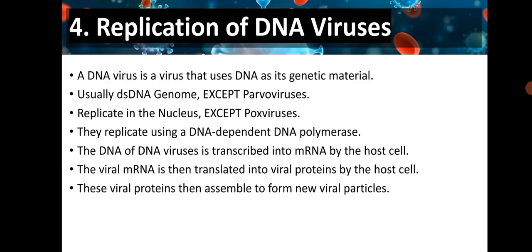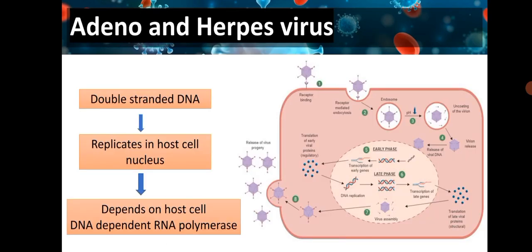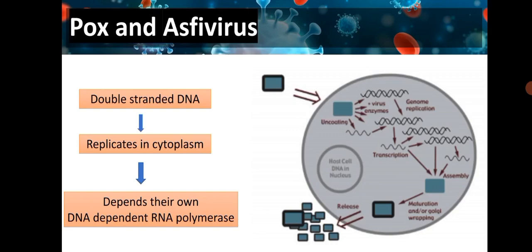Replication of DNA viruses: a DNA virus uses DNA as its genetic material, usually double-stranded genome except parvoviruses, and replicates in the nucleus except poxviruses. They replicate using a DNA-dependent DNA polymerase. The DNA is transcribed into mRNA by the host cell and translated into viral proteins, which assemble to form new viral particles. For adeno and herpes viruses, the double-stranded DNA genome replicates in the host cell nucleus using host cell DNA-dependent RNA polymerase. In pox and RC viruses, double-stranded DNA replicates in the cytoplasm using their own DNA-dependent RNA polymerase.